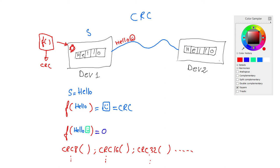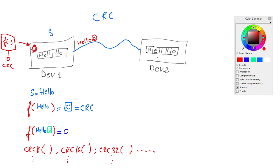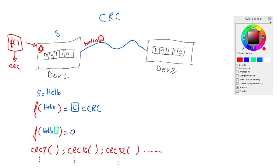On the receiving end, the other device receives 'hello' and the happy face. It then applies the same function to the received data — string plus CRC — and if the result is zero, there was no problem during the transportation of the data from device one to device two.